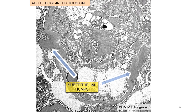In acute post-infectious — often post-streptococcal — glomerulopathy, diagnosis is possible based on the clinical history, serology, and light and immunofluorescence microscopy. But EM really confirms the diagnosis by demonstrating sub-epithelial humps.